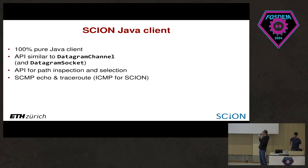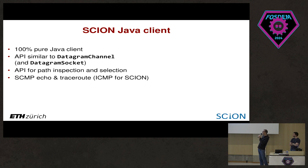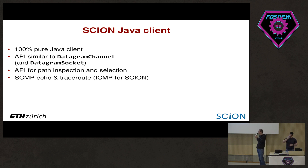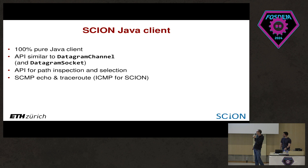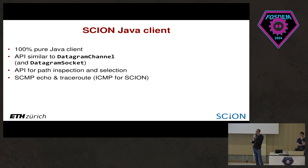The Java API is written in 100% pure Java and is very similar to the DatagramChannel that people may know from Java, with a few exceptions. DatagramSocket is currently not implemented but is next on the list, especially since many existing older projects rely on DatagramSocket rather than DatagramChannel. The library has an API for path inspection and selection — which is essential in SCION, since you get many paths from your AS and select the best one. It also supports the SCMP protocol, which is like ICMP for SCION — providing echo/ping and traceroute commands.